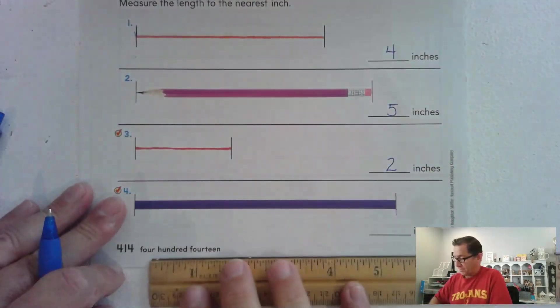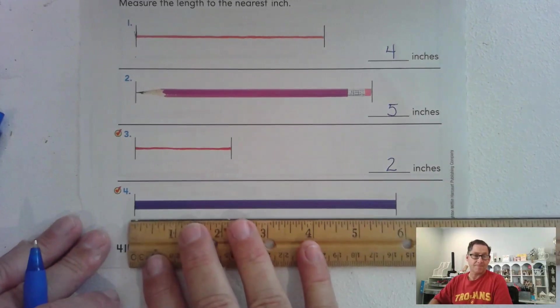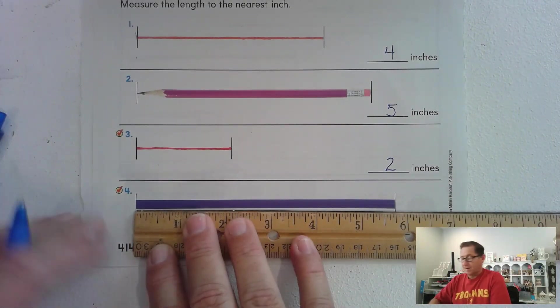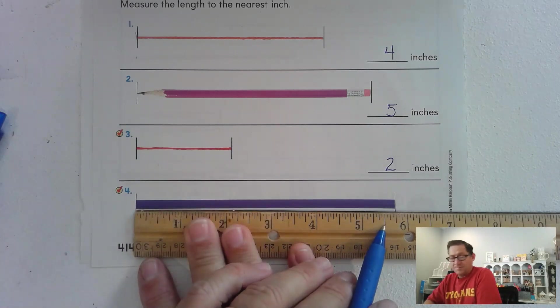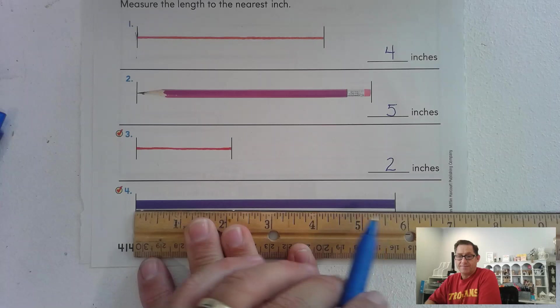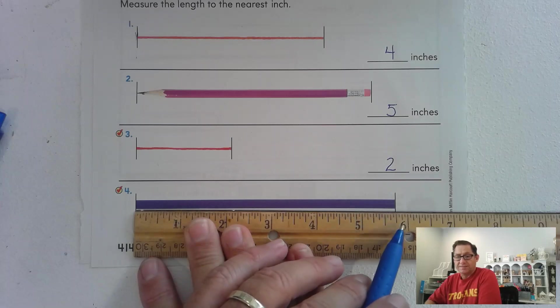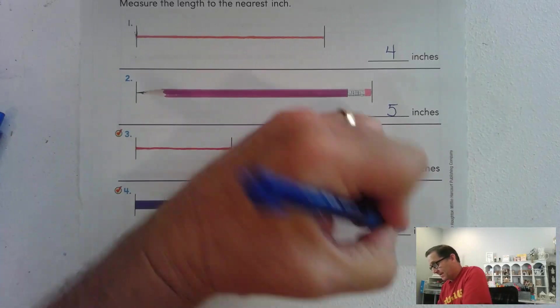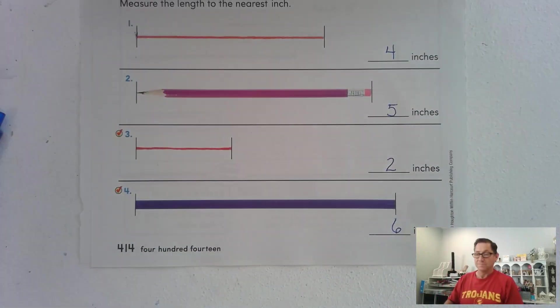This one's going to be longer than five inches, right? So let's line it up with zero. Now this time you notice that it's past that halfway mark that's in between the two numbers, right? So it's getting closer to six than it is to five. So six inches.